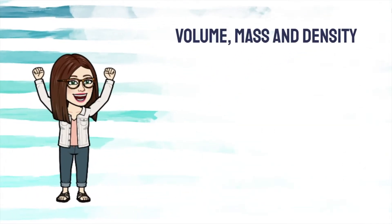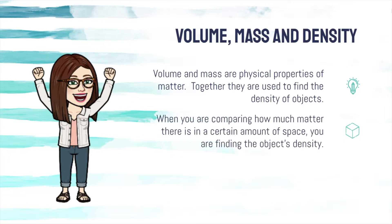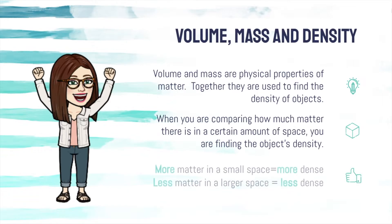Now how do volume, mass, and density all come together? Volume and mass are physical properties of matter. Together, they are used to find the density of objects. When you are comparing how much matter there is in a certain amount of space, you are finding the object's density. More matter in a small space equals more dense. Less matter in a larger space equals less dense.